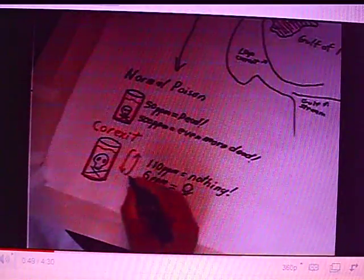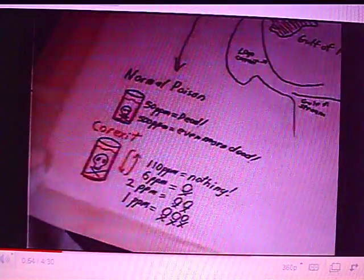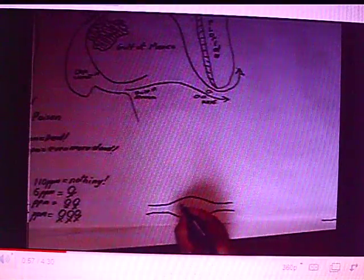At 2 parts per million, they die faster. And at 1 part per million, they die even faster. Corexit becomes more toxic the less concentrated it gets.